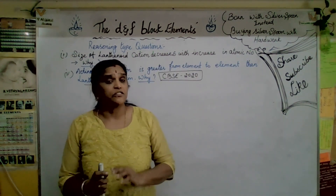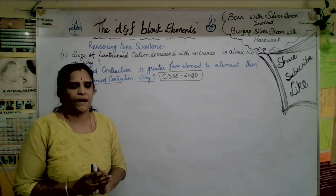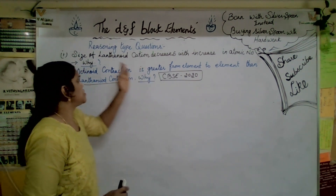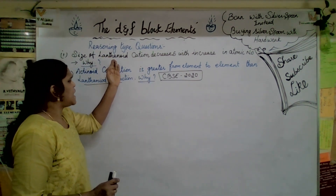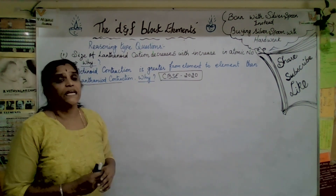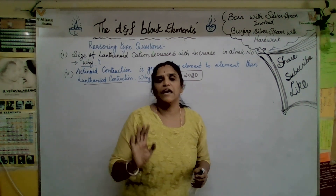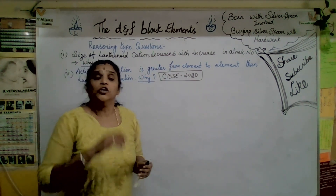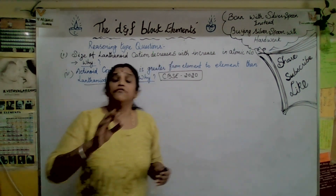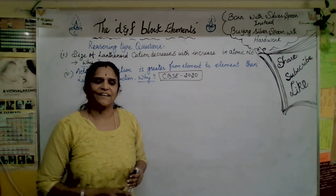Actually, both questions are mentioning a related, similar answer. The first question - size of the lanthanoid cation decreases with increase in atomic number. The main reason is the poor shielding effect of F electrons. Due to that poor shielding effect, effective nuclear charge increases and ionic size decreases.